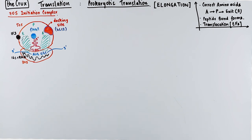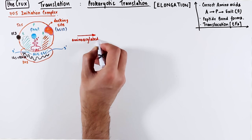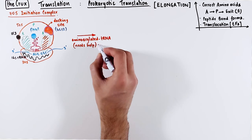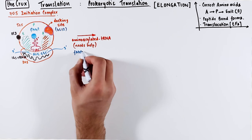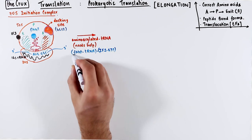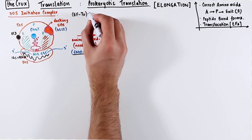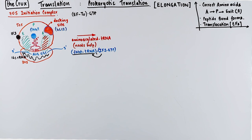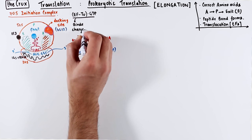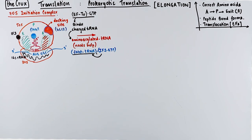If this 70S initiation complex were to start elongating, the first thing that should occur is the addition of a new charged tRNA at the A site. But these charged or aminoacylated tRNAs by themselves cannot bind to the A site, so they need help. For all other regular tRNAs, an elongation factor EF-Tu — where Tu stands for thermo unstable — offers this help. When loaded with a GTP, EF-Tu will bind to any charged tRNA which is not the initiator tRNA.